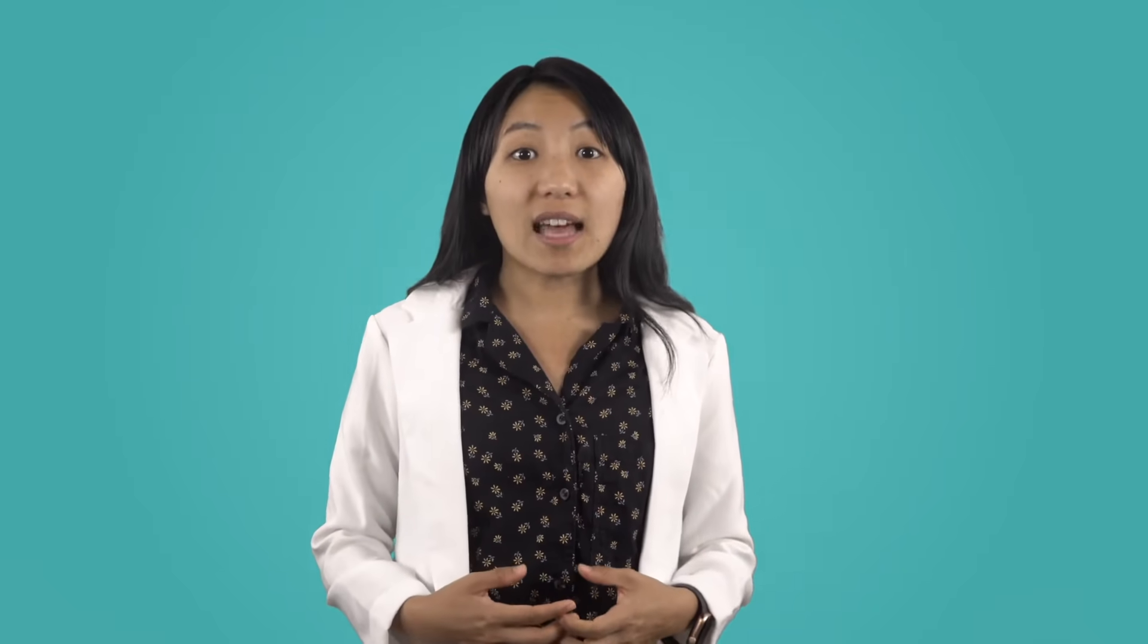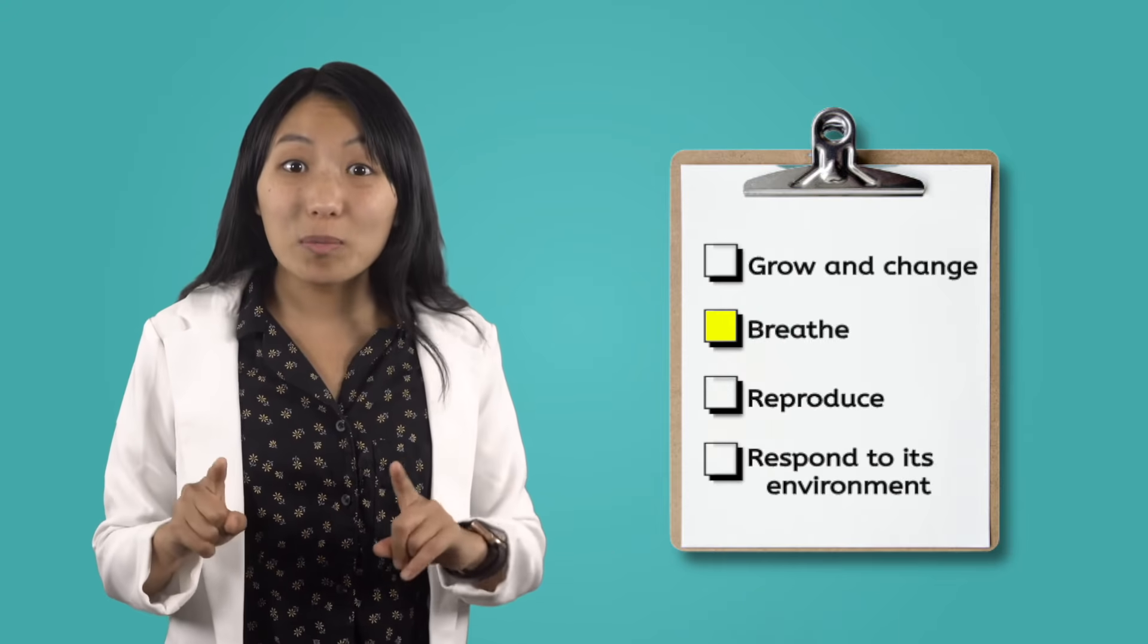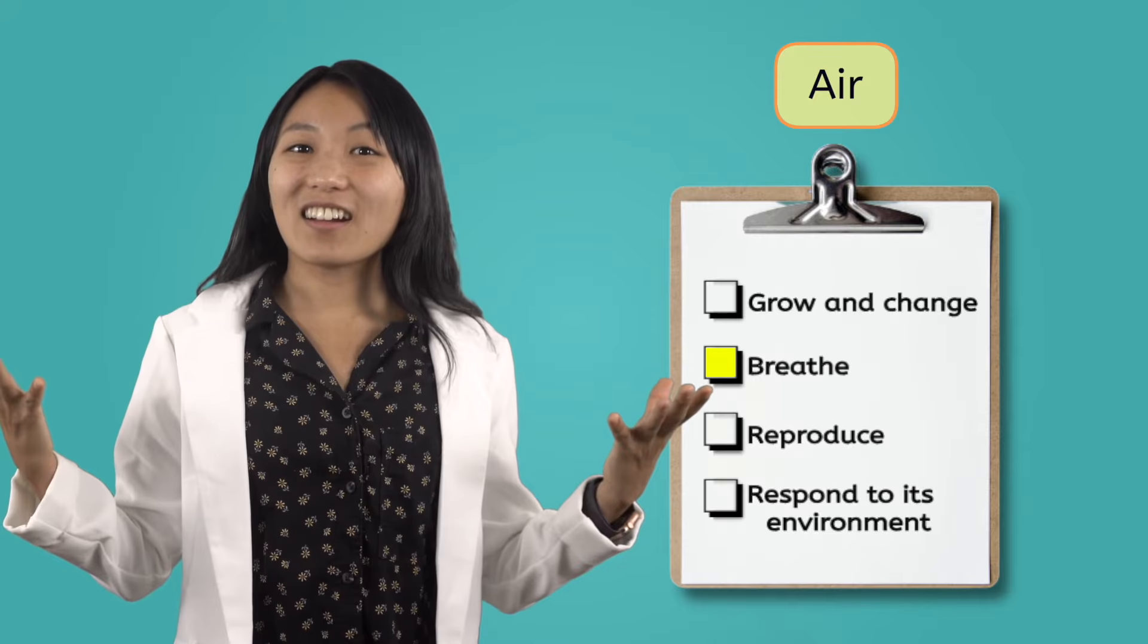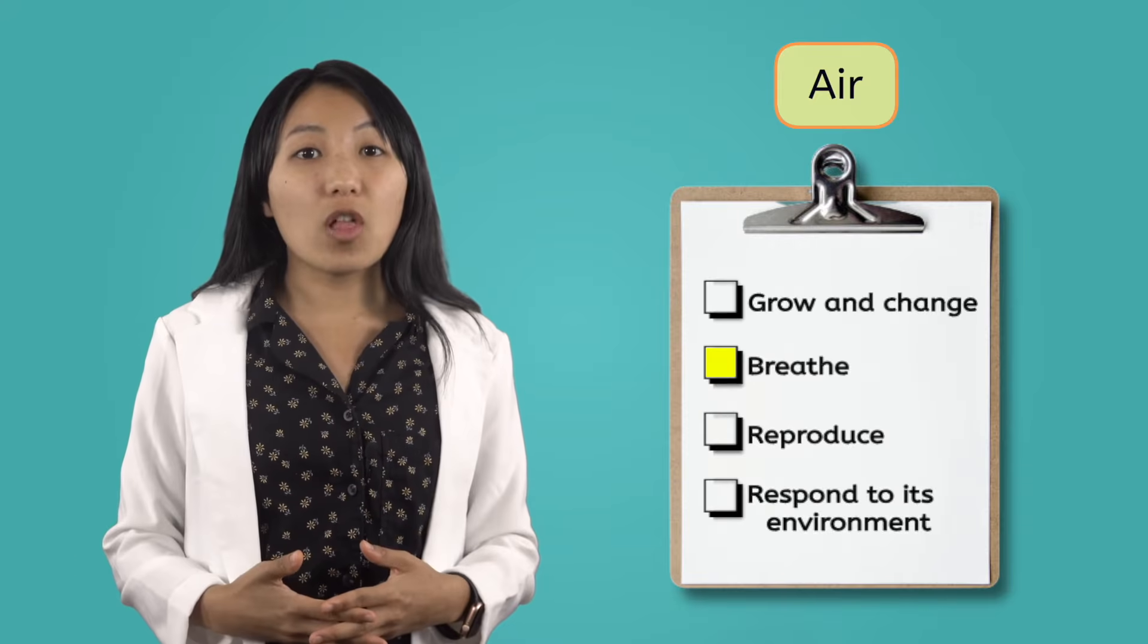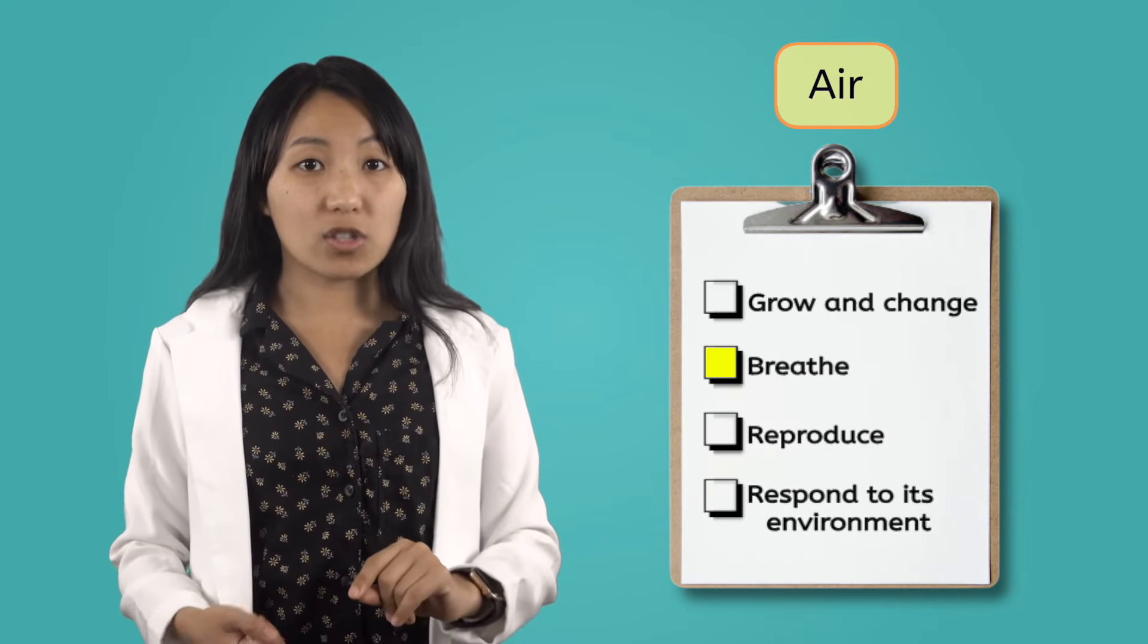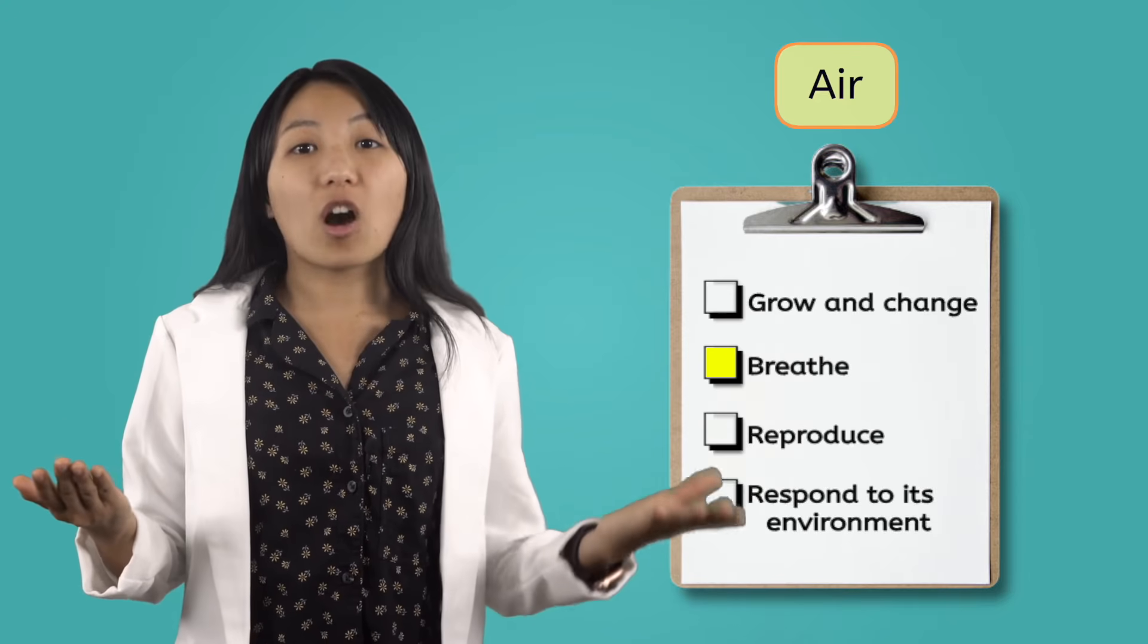All living things have five basic needs that help keep them alive. Remember we learned that a characteristic of all living things is that they breathe? Well in order to breathe that means all living things need air. Air is made up of lots of different parts but the most important parts are two gases called oxygen and carbon dioxide.